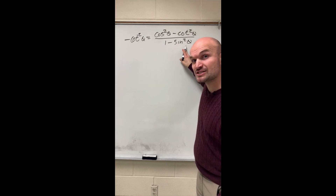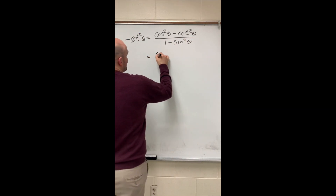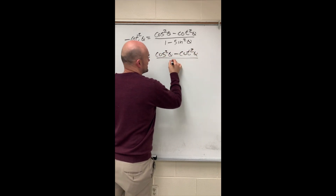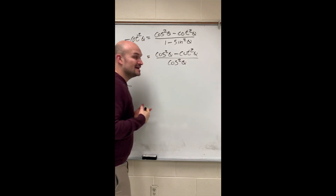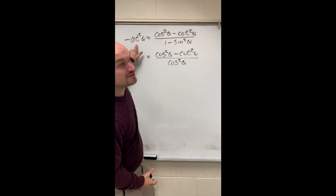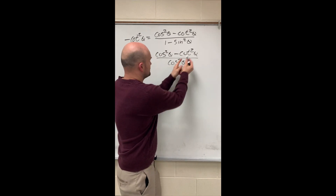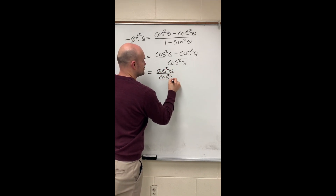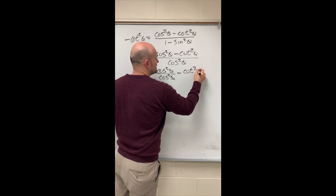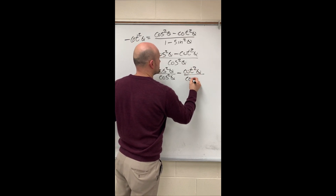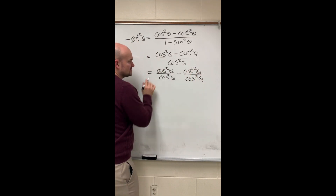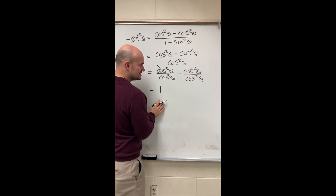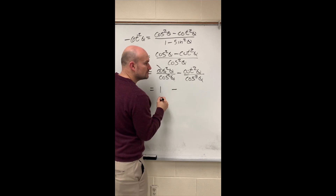The first thing I'm going to do is rewrite 1 minus sine squared as cosine squared — I have to write on this side because I prefer working on that side. So therefore that can be written as cosine squared of theta. Now if I want to get this simplified down to cotangent squared, I can divide this cosine squared into both terms. That would be cosine squared of theta divided by cosine squared of theta — like the distributive property with division. Cosine squared over cosine squared is just going to equal one.